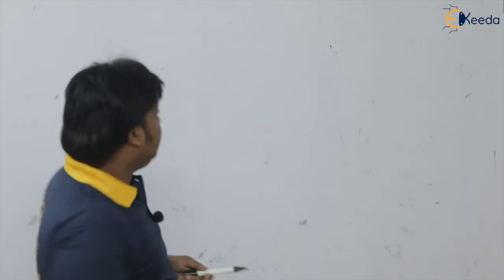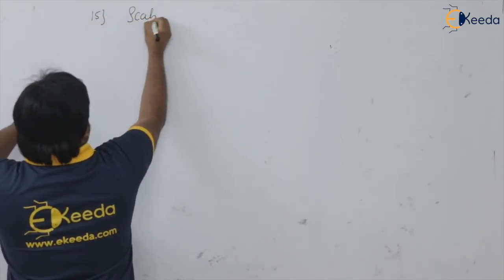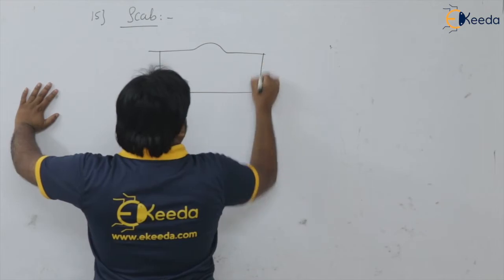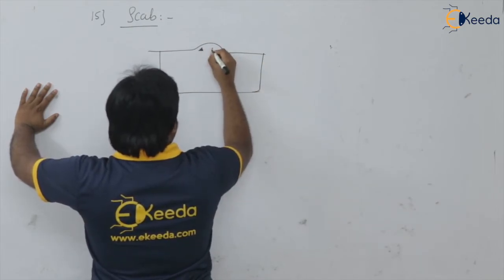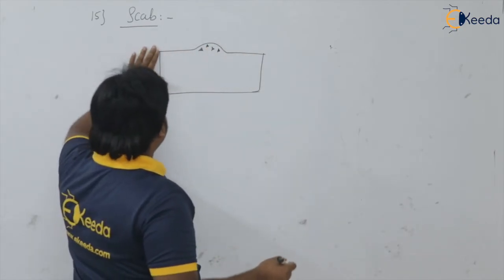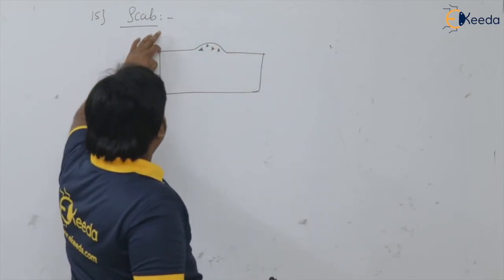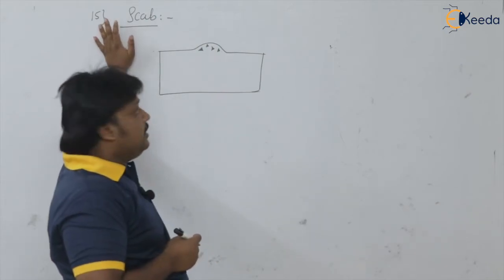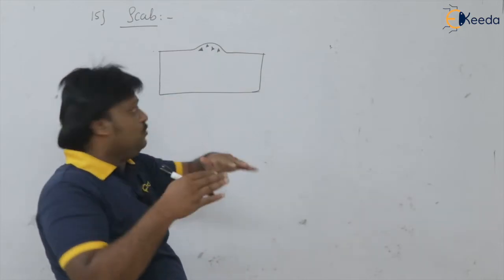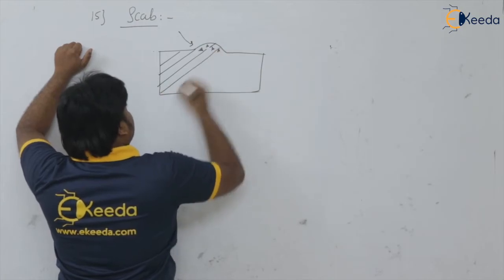Next we are having the scab, also referred to as slab. This is a thin layer of material which is protruding onto the top surface of the casting. This is known as the scab or slab.